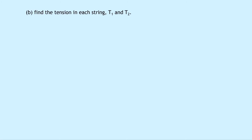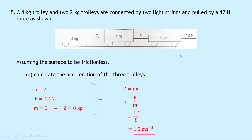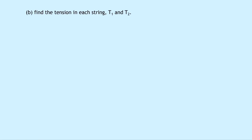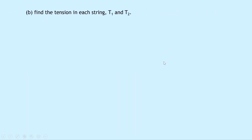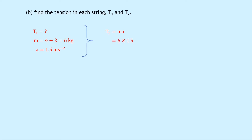Part B asks for the tension in each string T1 and T2. The masses causing tension in T1 are the four kilogram and two kilogram trolleys behind it, giving a combined mass of six kilograms. Writing T1 equals MA and substituting six times 1.5 gives a final answer of nine Newtons for T1.